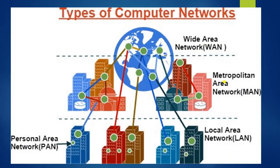This diagram shows the types of computer networks. For a country or continent, you use a wide area network. To cover a city, you use a metropolitan area network. To connect two buildings, a school, or a campus, you use a local area network. A personal area network is used for very short distances.